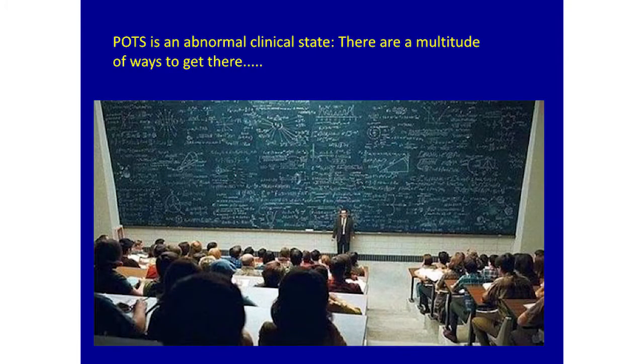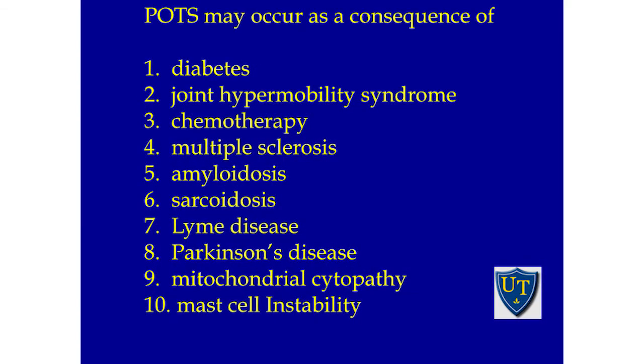It's actually an extremely complex system with multiple layers of feedback. If a computer network is not working right, it's usually not just one problem — there are hundreds of different problems. There are hundreds if not thousands of different ways a network can malfunction. Kind of like trying to give a lecture over what could be causing these — it would take several days. POTS may be a consequence of all of these things. I'm just going to focus on a very few that we've looked at.